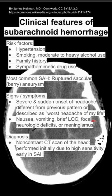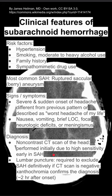Diagnosis is made with a non-contrast CT scan of the head. This is performed initially because it has a high sensitivity early in subarachnoid hemorrhage. If your CT scan of the head is negative and you still suspect subarachnoid hemorrhage, you need to do a lumbar puncture. This is what you do to definitively rule out subarachnoid hemorrhage if your CT scan is negative.